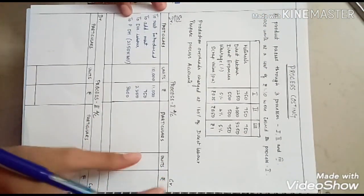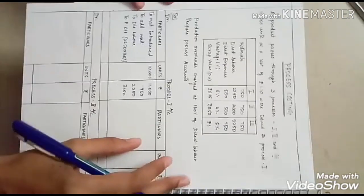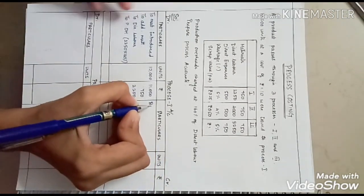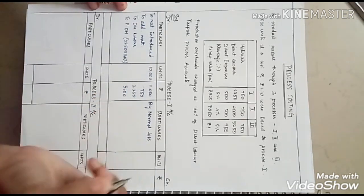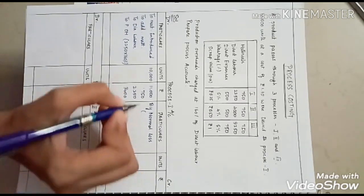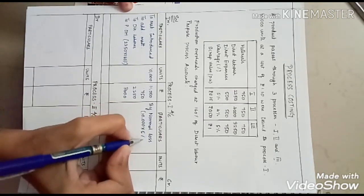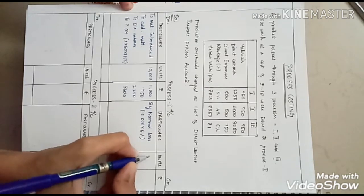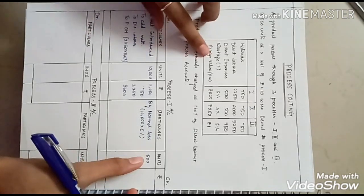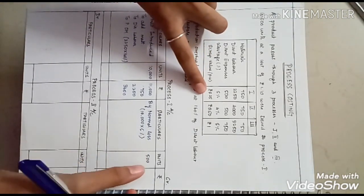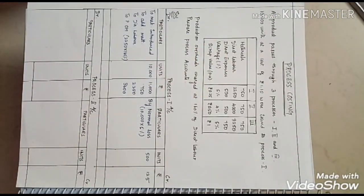Wastage is nothing but a normal loss. When a product goes through a process, it is usual that it incurs normal loss. 5% normal loss is charged on the credit side. Calculation for normal loss is taken from units introduced — 10,000 units into 5% gives 500 units, meaning 500 units were lost during the process. The scrap value for those 500 units is 0.25 paise, so 500 into 0.25 gives 125.